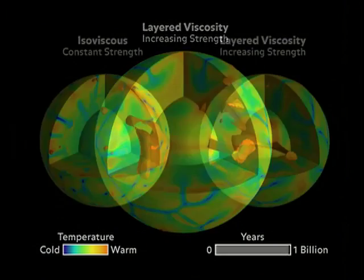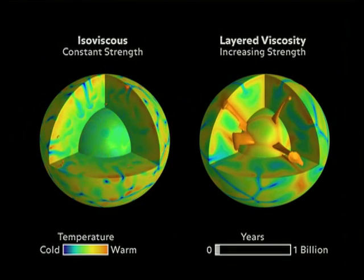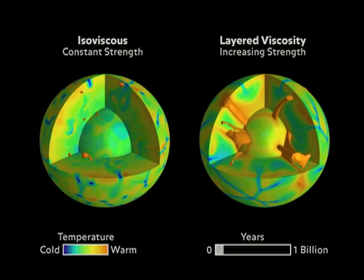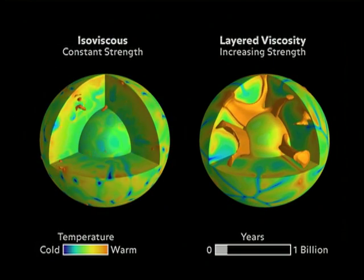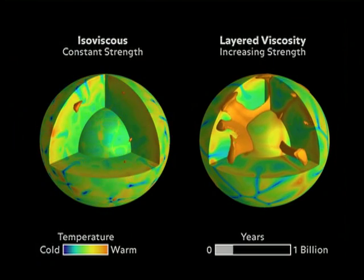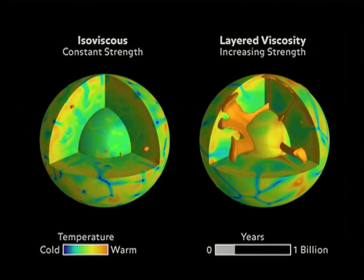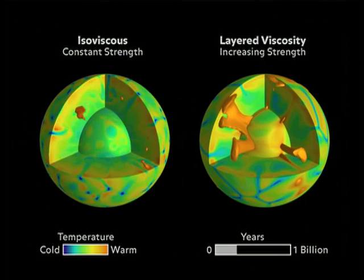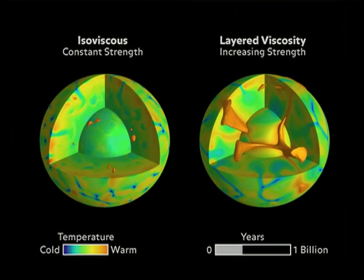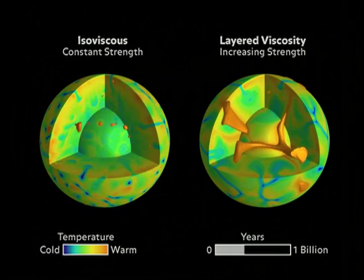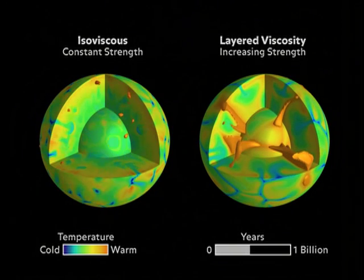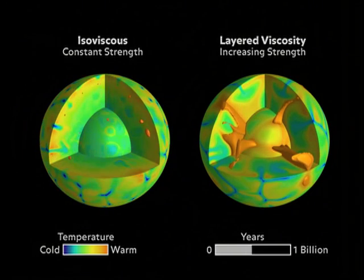When we compare the two models side by side, the model that is isoviscous has subduction zones that form along points and they're very close to each other. This model wishes to change rapidly and it chooses different structures all the time. They evolve rapidly, they change rapidly. That's not very much in agreement with what we know about how the Earth has evolved over time.